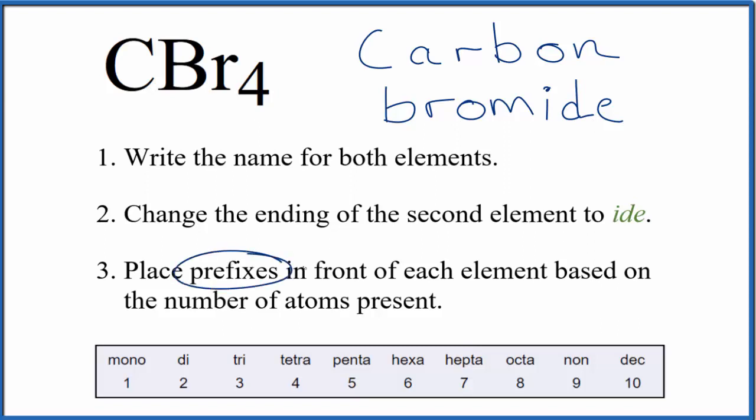Now we need to use prefixes in front of each element based on how many atoms are present. For the first element, since we only have one carbon, we don't do anything.